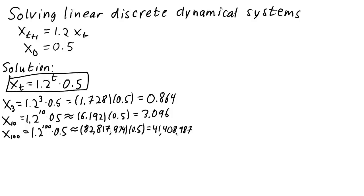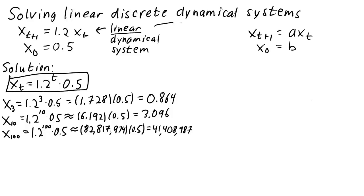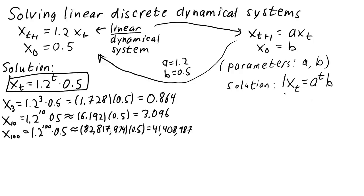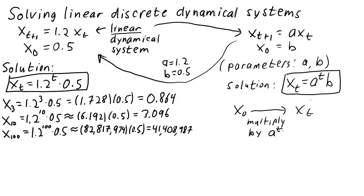The reason we could solve this dynamical system was because it is so simple. It is a linear dynamical system because the right-hand side is a linear function of x sub t. In general, we can write such a linear system as x sub t plus 1 equals a times x sub t, with initial condition x0 equals b, where a and b are just two numbers called parameters. If you substitute a equals 1.2 and b equals 0.5, you have the system we began with. We can still solve the linear system with arbitrary parameters. The solution is x sub t equals a to the power of t times b. To go from the initial condition x0 equals b to x sub t, we just have to multiply by a t times, or multiply by a to the power of t.